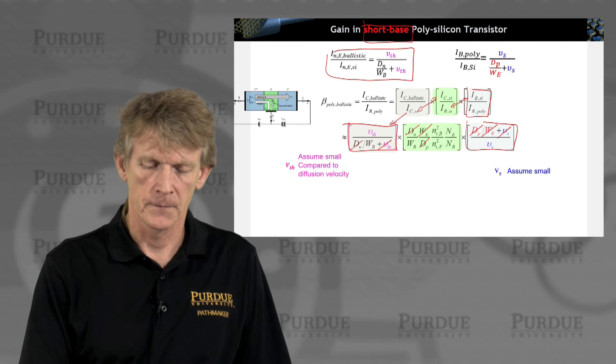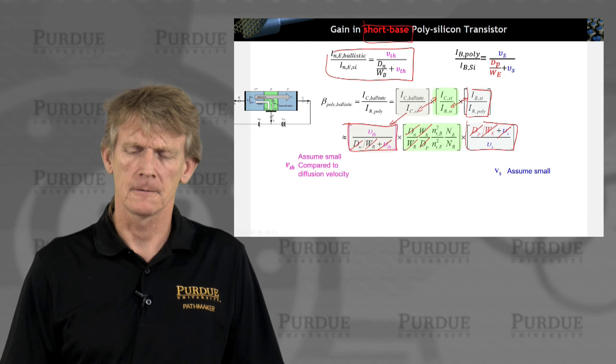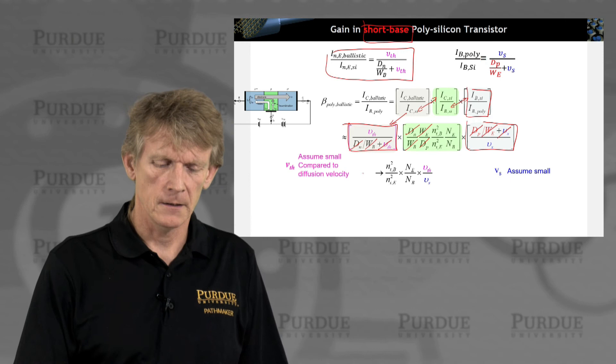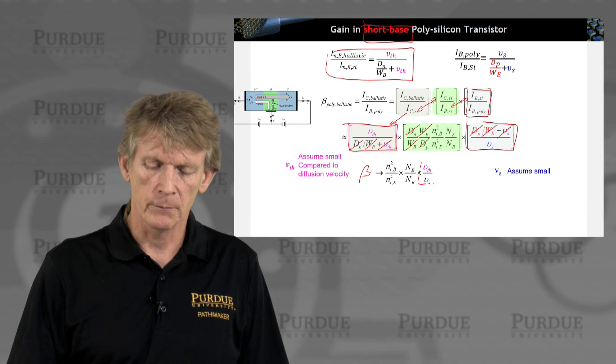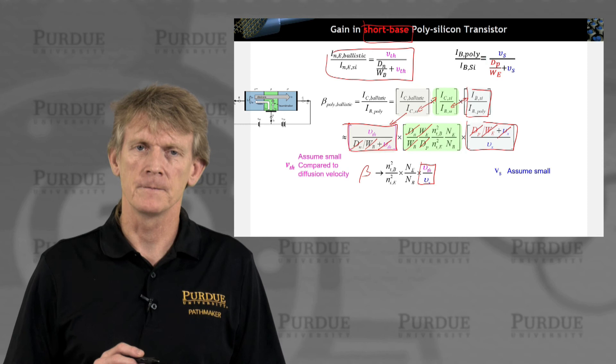If I do that, DN, DN, WB, WB. There's not a whole lot left. That's the expression I get. So beta turns into something that is now just doping of the emitter, doping of the base, and some material properties that we don't necessarily have good control over.